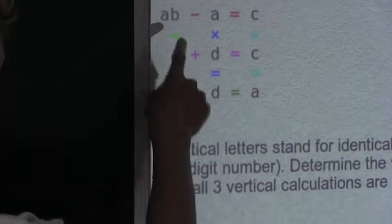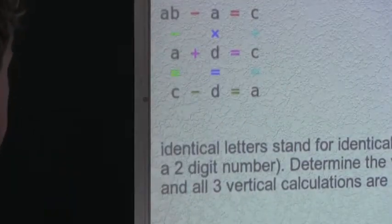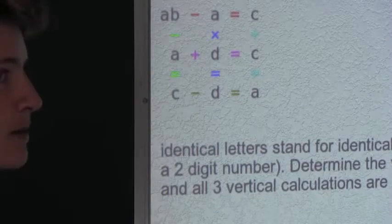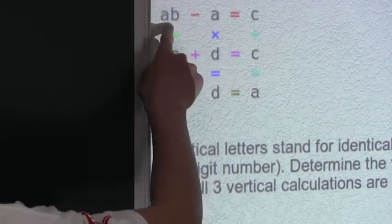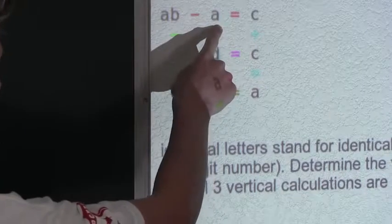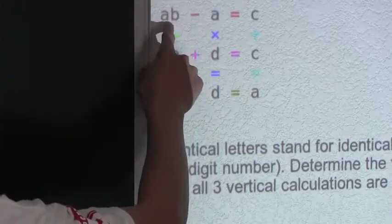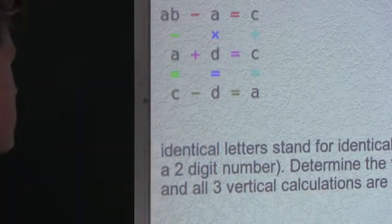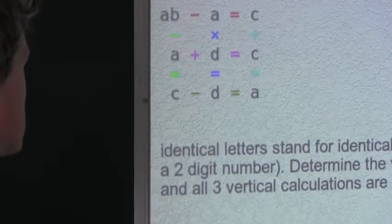So now let's look at the top horizontal equation, which states AB minus A equals C, which is the same as having C plus A equals AB. We know that A is 1, so we have a one-digit number plus 1 equals a two-digit number. So C must be the greatest one-digit number, which is 9. So we know that C must equal 9.